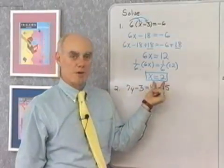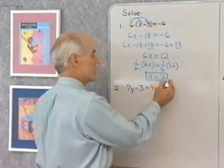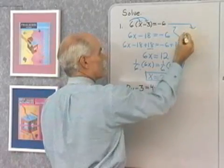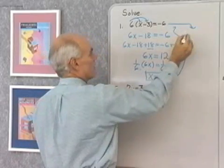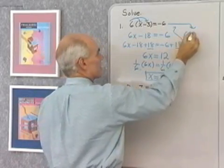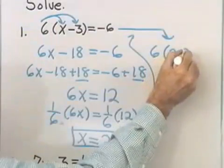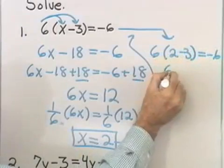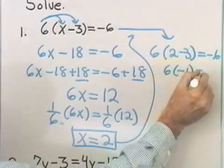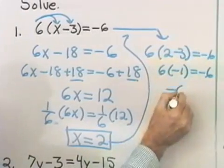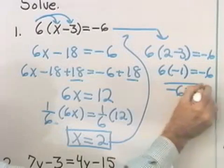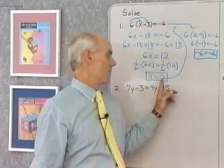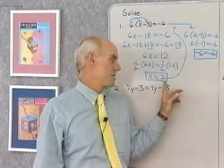Before I leave this problem, I want to check the solution x equals 2 back in the original equation. I'll substitute x equals 2: I get 6 times (2 minus 3) equals negative 6. 2 subtract 3 is negative 1, and I end up with negative 6 equals negative 6. I get a true statement, which means I was correct and got x equals 2.